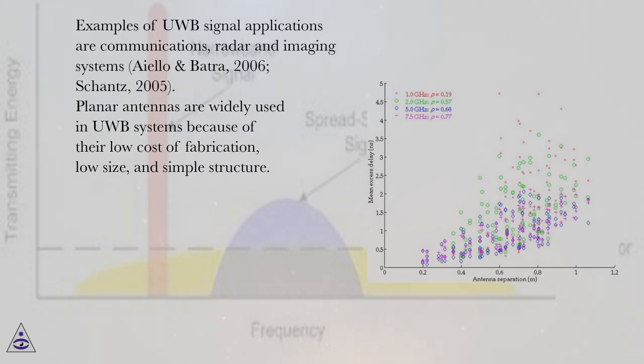Examples of UWB signal applications are communications, radar and imaging systems (Aiello & Batra, 2006; Schantz, 2005).